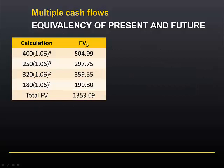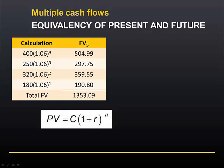Here are the calculations for the future value of that series of cash flows as at period 5. If we want to find the present value of that total future value, this is the formula for the present value of a single cash flow, and we can treat the $1,353.09 as if it was a single cash flow as at period 5.